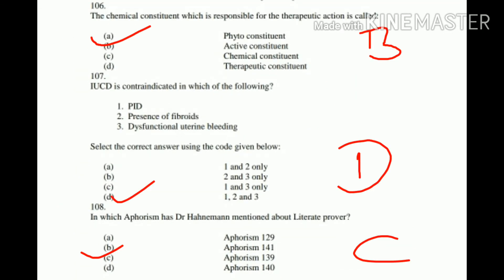Question number 106: The chemical constituent which is responsible for the therapeutic action of medicines — what is it called? Option A. Phytoconstituent, B. Active Constituent, C. Chemical Constituent, D. Therapeutic Constituent. The right answer is B. Active Constituent.